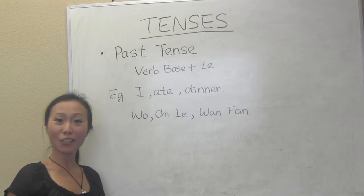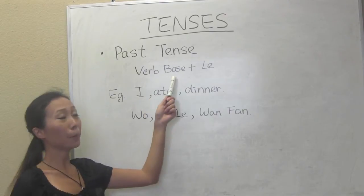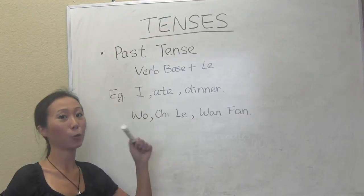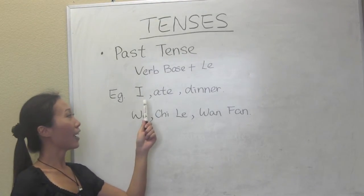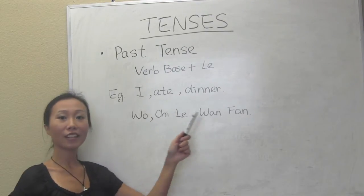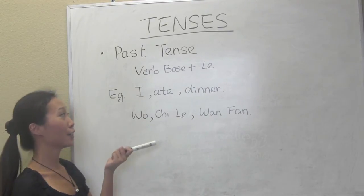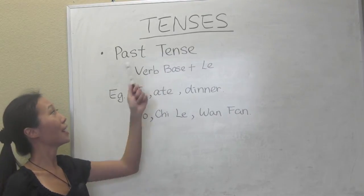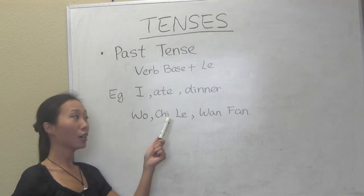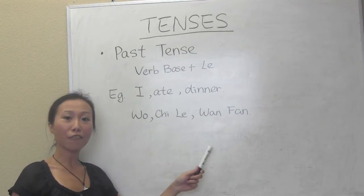The next tense we're going to learn is the simple past tense. In simple past tense, we use the verb base plus 了. 了 is in neutral tone, so end it fast and quick. For example, 'I ate dinner' — 我吃了晚饭. Verb base 吃 plus 了 means 'ate.' So 我吃了晚饭 means 'I ate dinner.'